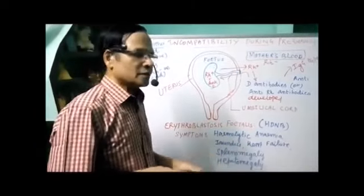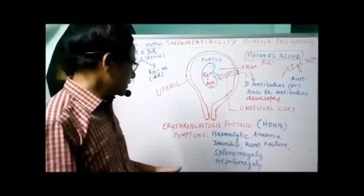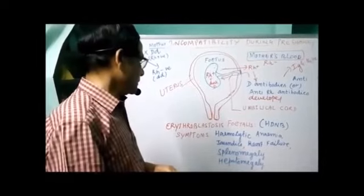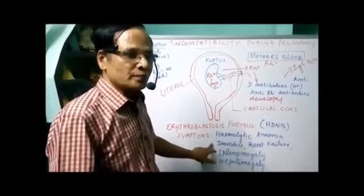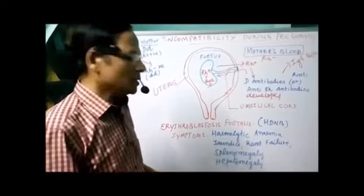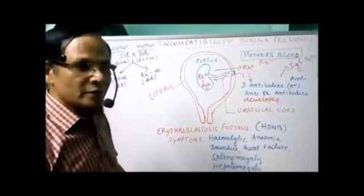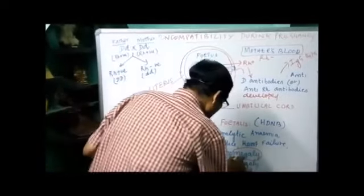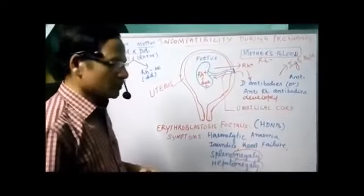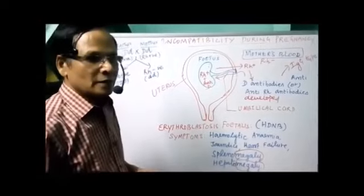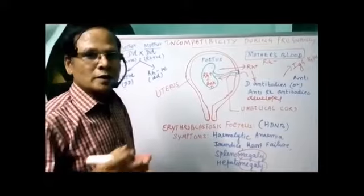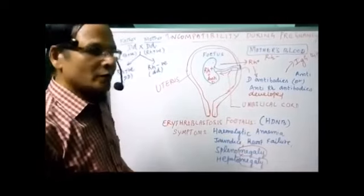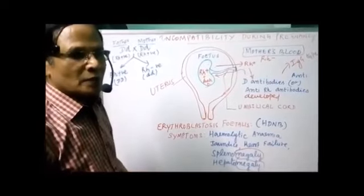What are the main symptoms? Why is it called hemolytic disease? Hemolysis means destruction of red blood cells. So the symptoms are hemolytic anemia — hemolysis means destruction of RBCs, and anemia means decrease in the number of RBCs. Jaundice occurs because of increased production of bilirubin — the bile pigment. Also heart failure, splenomegaly — any word ending with the suffix -megaly means enlargement, so splenomegaly means enlargement of the spleen — and hepatomegaly, where hepato means liver, so enlargement of the liver. And bilirubin also accumulates in the brain, causing brain damage.